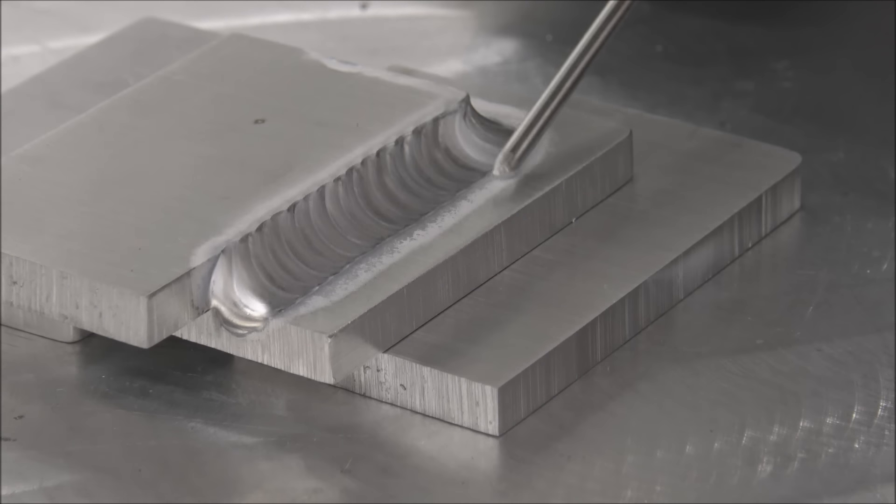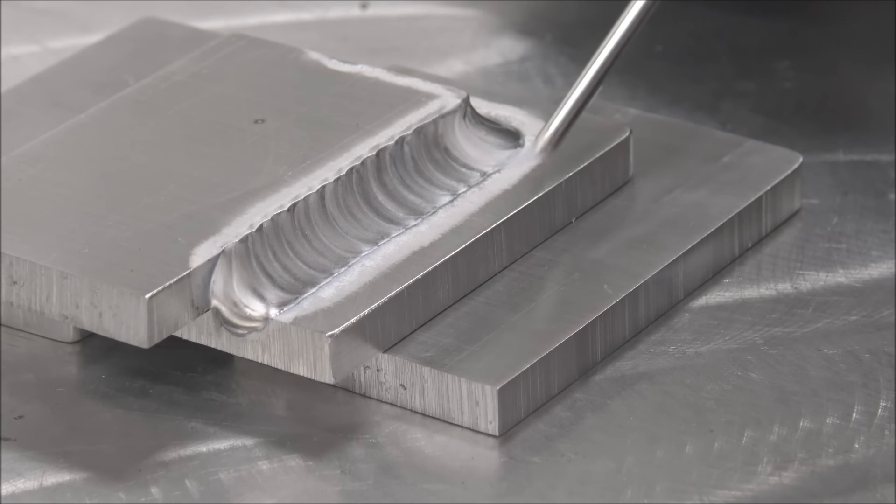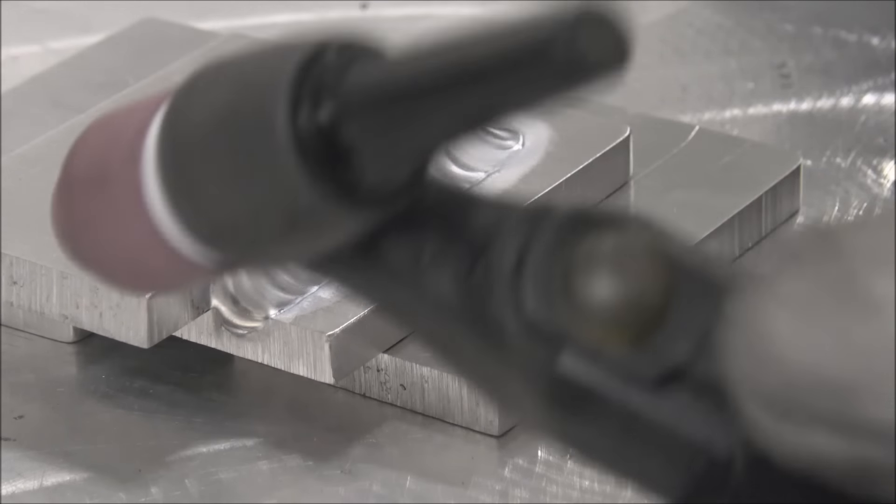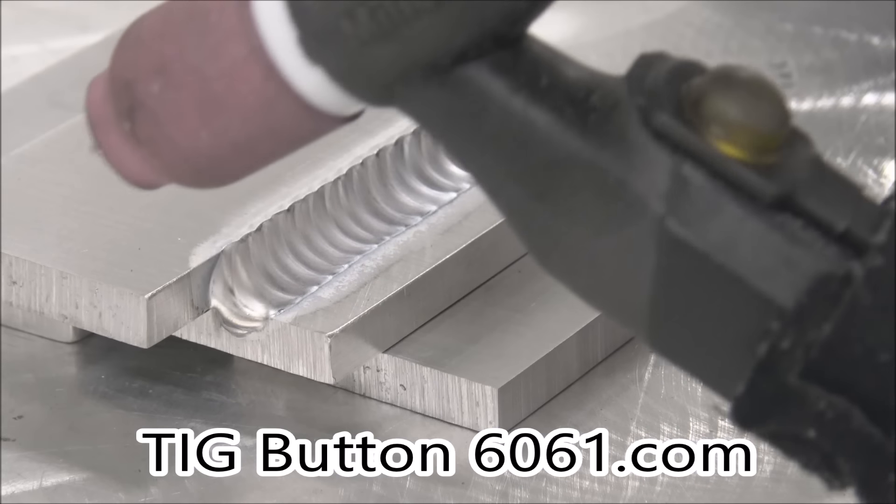And then since this part's already hot, you're going to need less amperage to weld this joint. If you use the same amperage, you overheat it. So that's why I like using the variable amperage tick button that I sell on the other side.